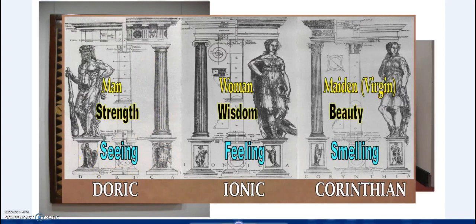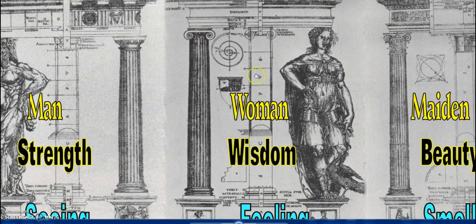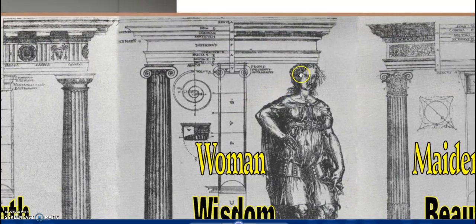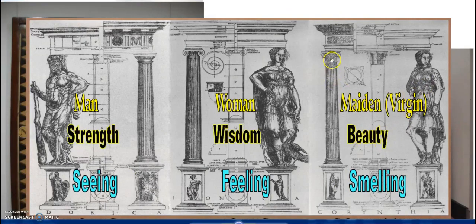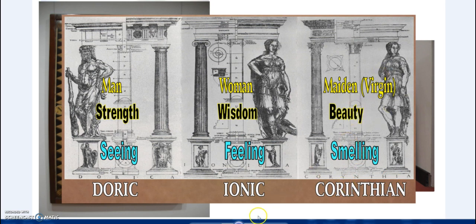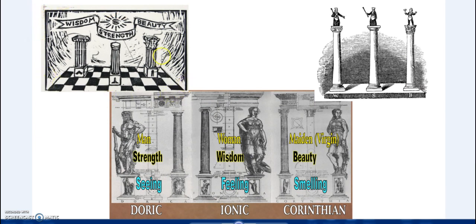There are three Greek columns and five Roman columns, connected to the five senses. The Doric is the male column of strength. The Ionic column with its simple swirls is the female, or wisdom. In ancient times, a woman's beauty was represented by a very simple hairstyle and less jewelry, as opposed to the maiden who would have more jewelry — and that's why the Corinthian column is this very ornate form: the column of beauty, or the maiden, the virgin. So: Doric — strength; Ionic — wisdom; Corinthian — beauty.